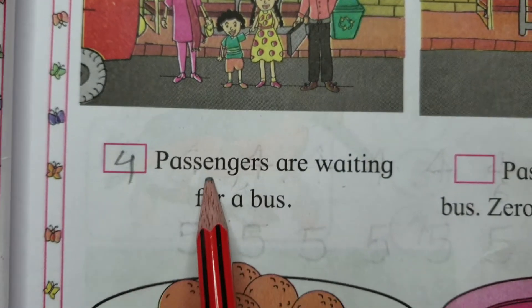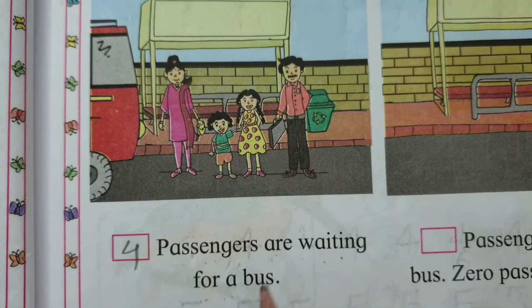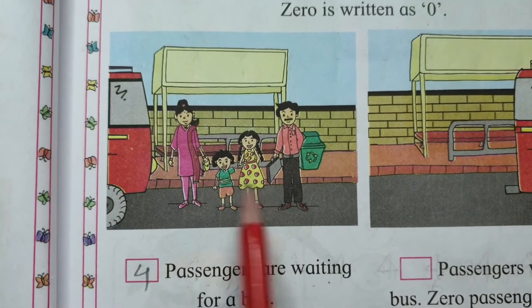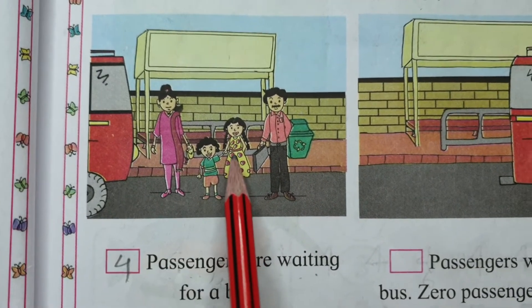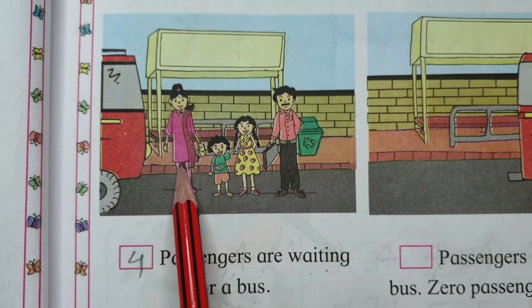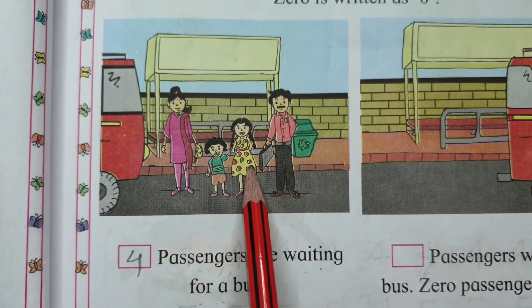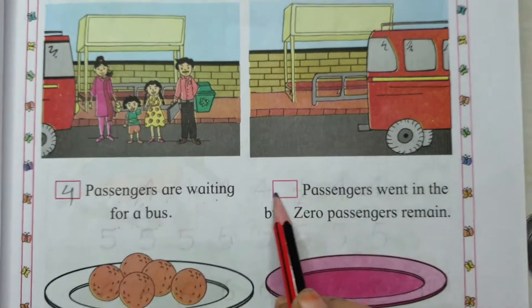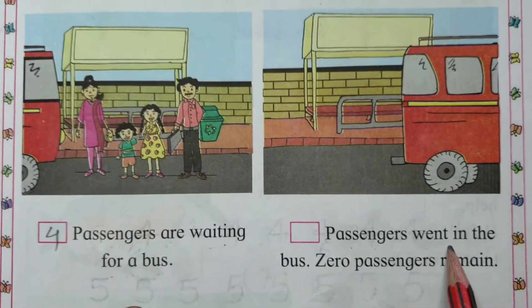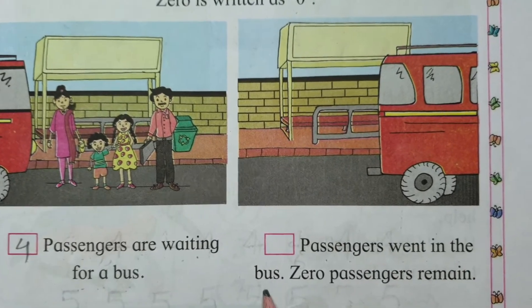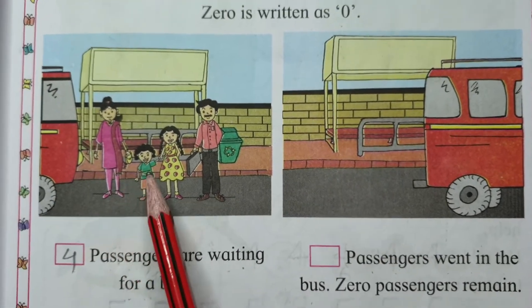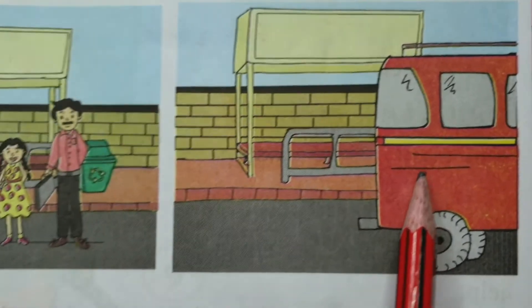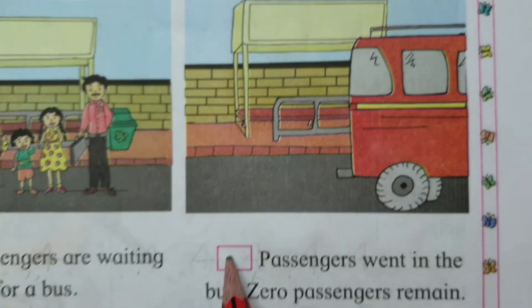Four passengers are waiting for a bus. Who is waiting? The passengers are waiting for the bus — bus ka wait kar rahe hain. Ab second picture mein dekho — four passengers went into the bus. Jab bus aayi toh yeh 4 passengers bus mein chale gaye.